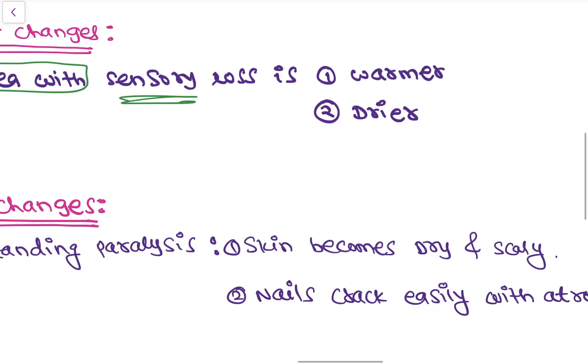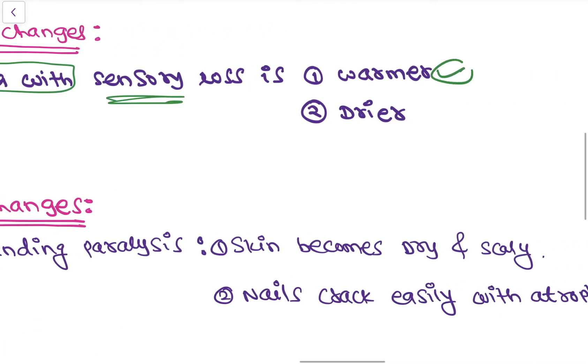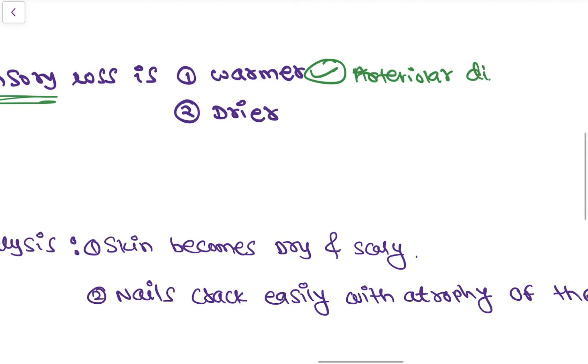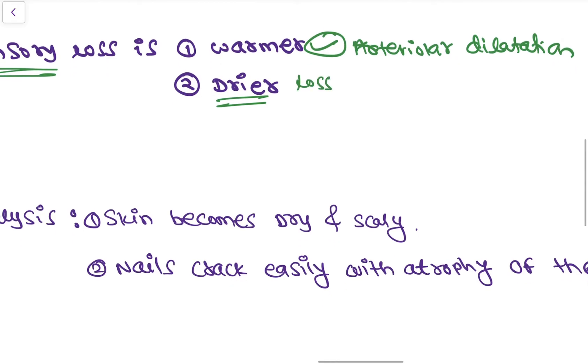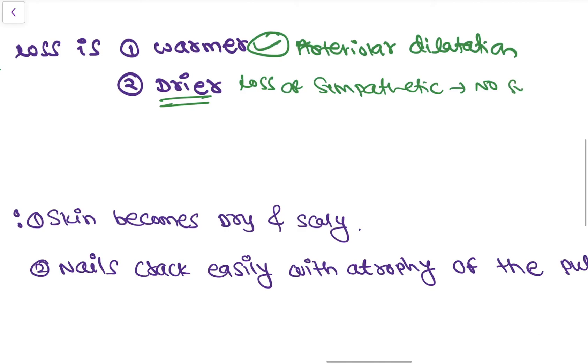And it is drier - why it is dry? Because there is loss of sympathetic activity, so because of the loss of sympathetic activity there is no sweating. That's why it is warm and dry.